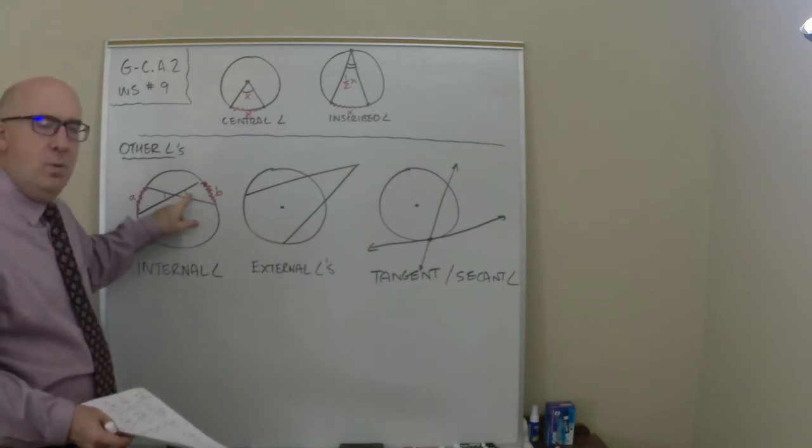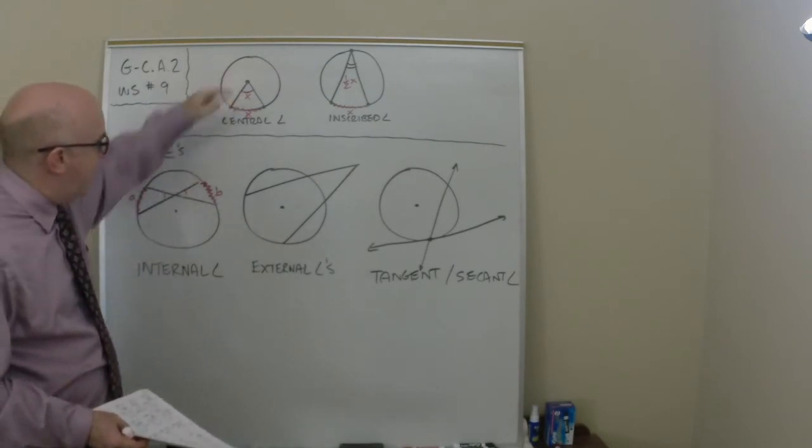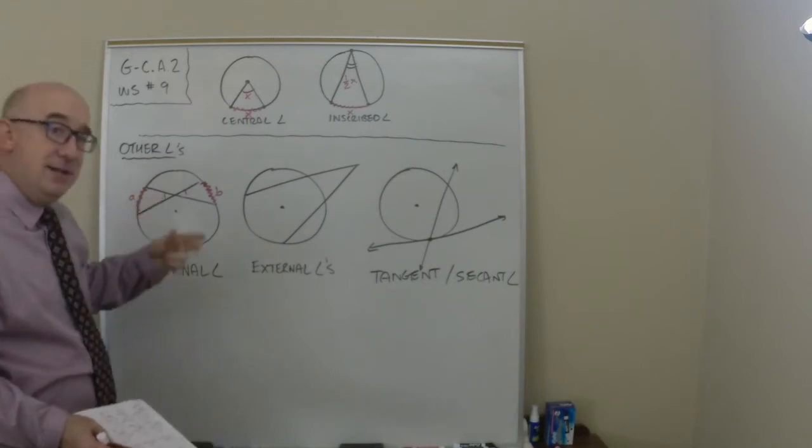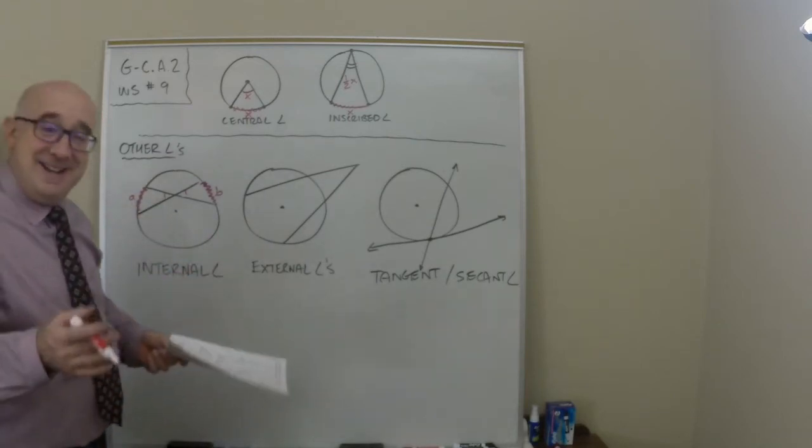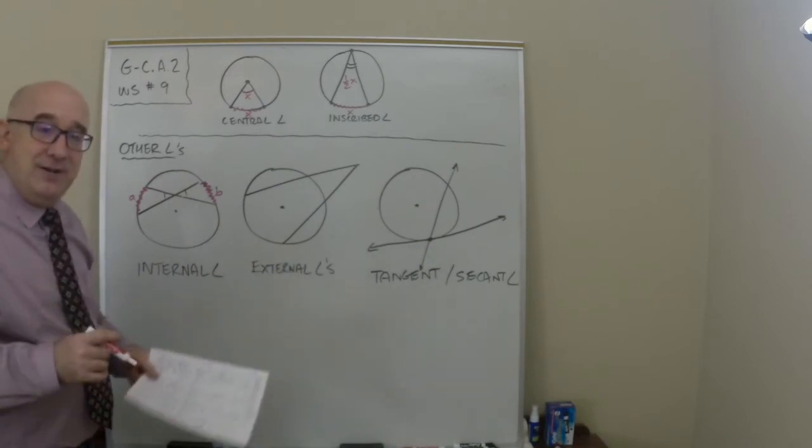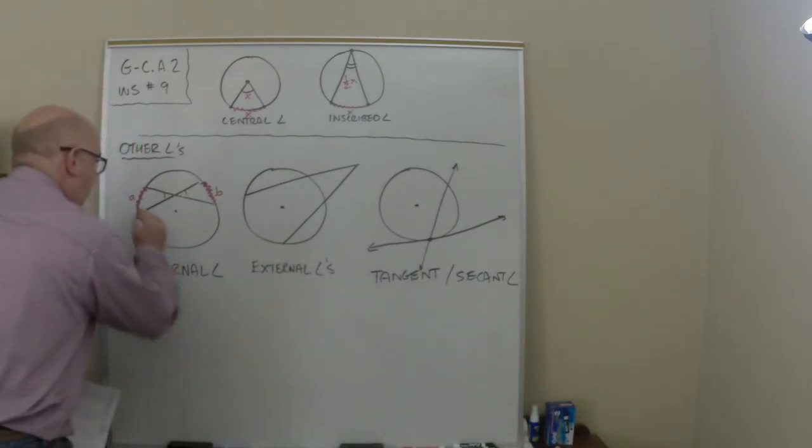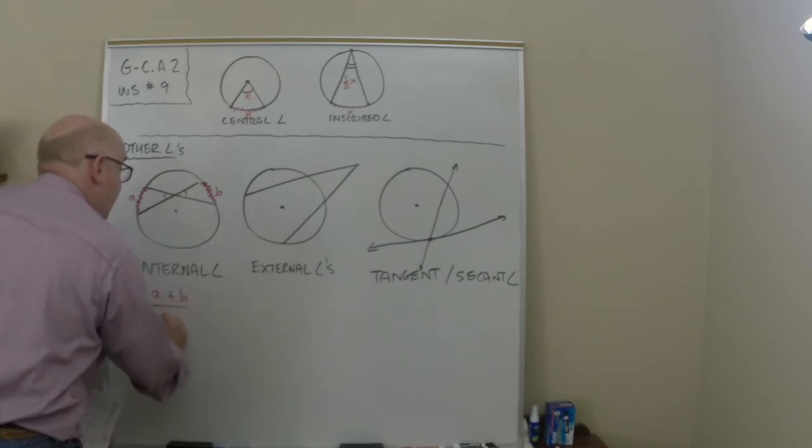So what we do here to obtain it, some students say, oh it's b. Well it's not to the center so no, it isn't the same. Some say well it's a. It's not to the center so that doesn't work either. But what it is is the average of those two arcs. So if you took the arc value a and you added it to the arc value b and divided by 2, you would get the measure of angle 1.